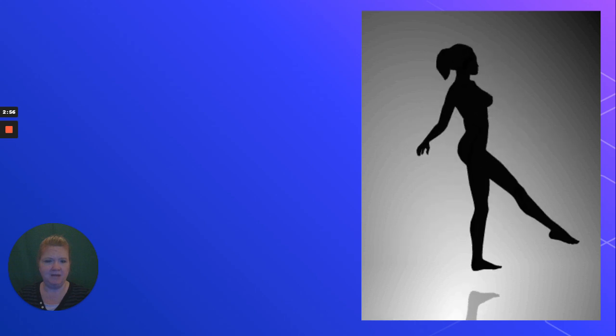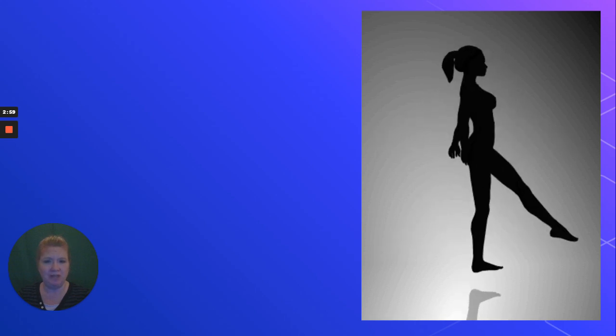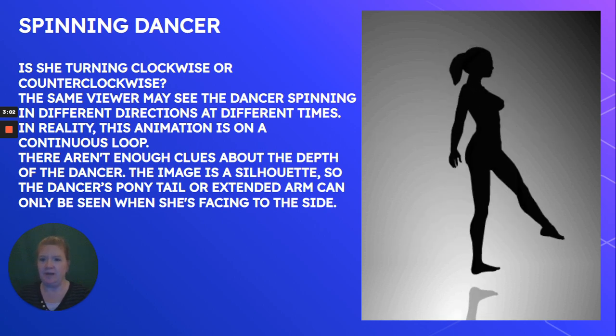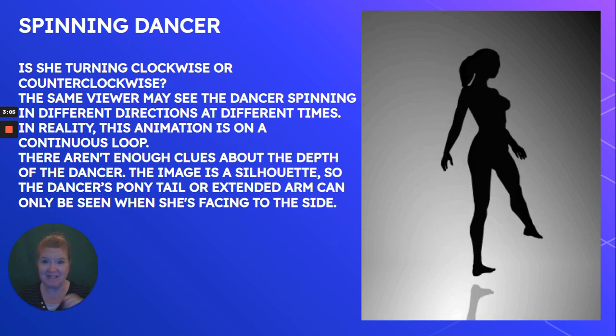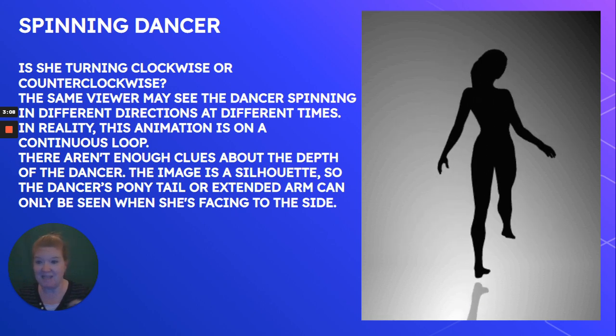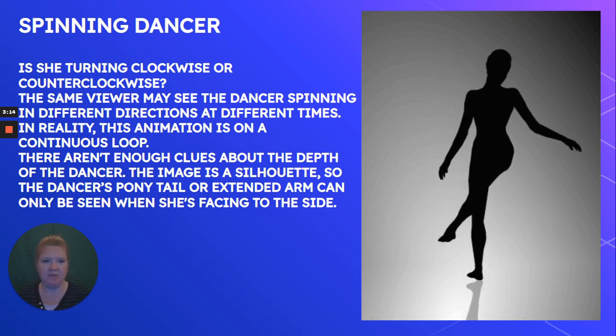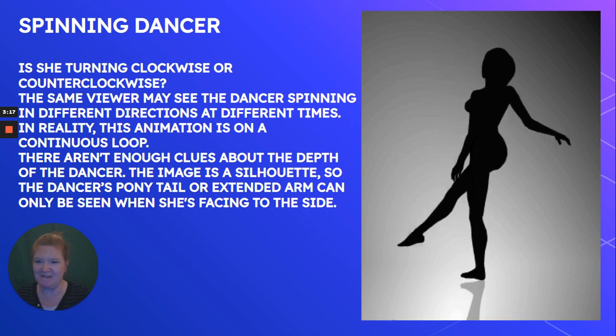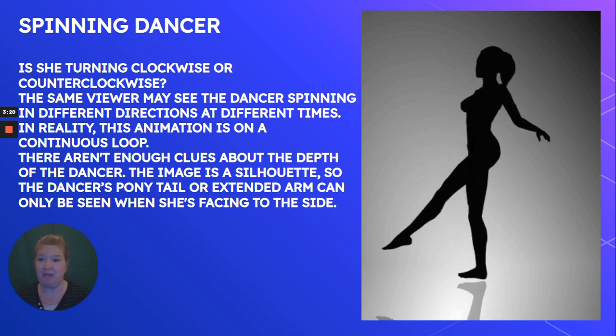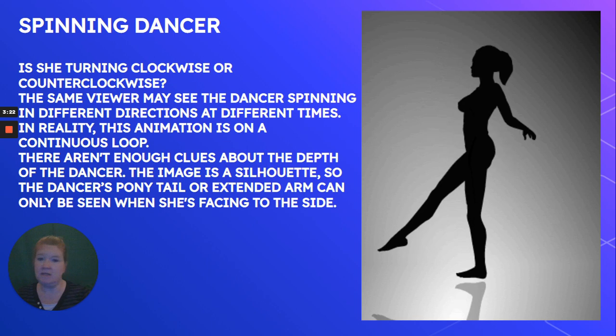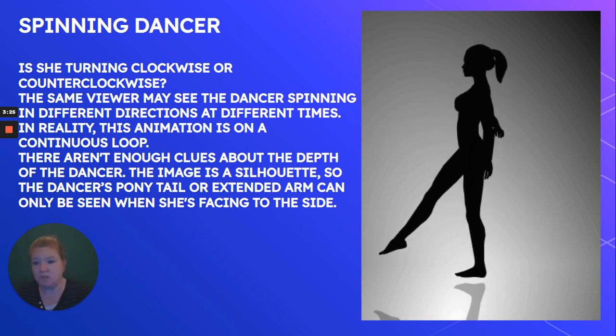Now let's look at this one. We have a spinning dancer — in which direction is she spinning, clockwise or counterclockwise? Take a moment and look. You may see the dancer spinning clockwise or counterclockwise at different times. I always see her spinning clockwise, and it's really hard — I have not been able to see her spinning in the opposite direction. Some people can't. In reality, this is just an animation on a continual loop, so she's not switching directions.